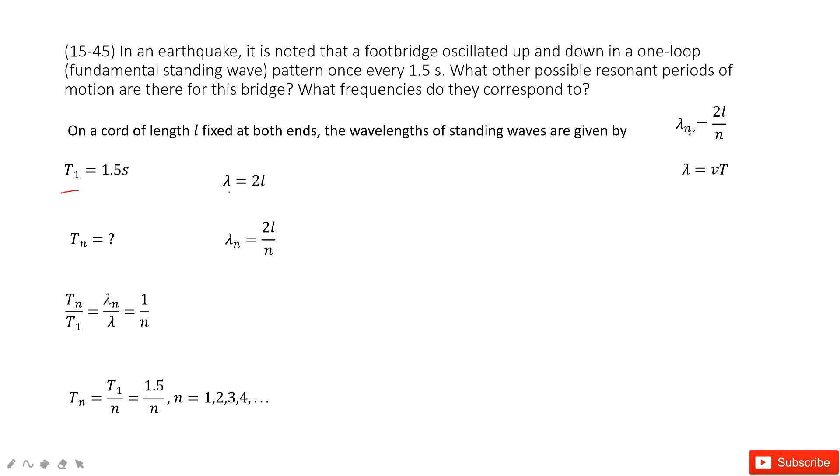This is Wynard. And for different number of standing waves, we can find lambda n equal to 2L over n. So that means in other situations, lambda n is 2L over n.